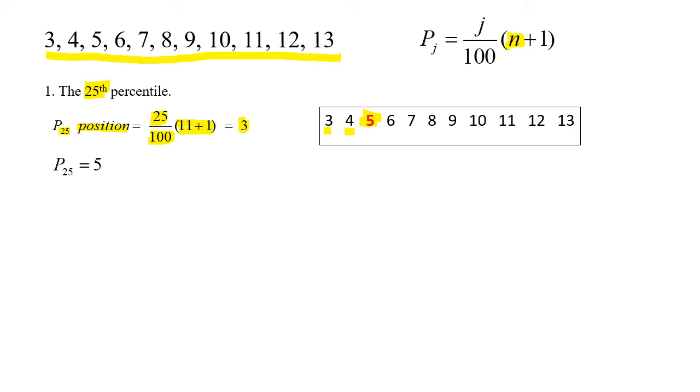Now, it won't always be as simple as this. Let's look at the next example. The next example speaks about the 62nd percentile, which immediately means I'm dealing with P62, which means the j value now is 62. The N still remains as 11. I start off by finding the 62nd position. The 62nd position is 62 divided by 100 into 11 plus 1, and this time I get a very funny answer, which is 7.44.